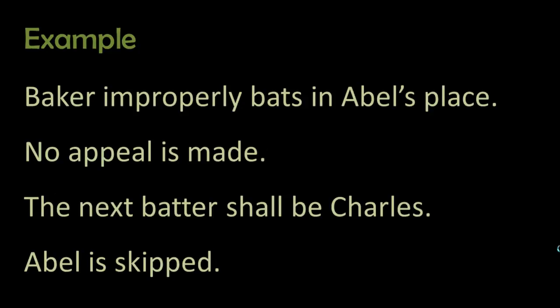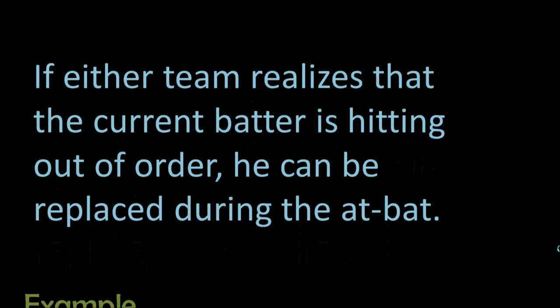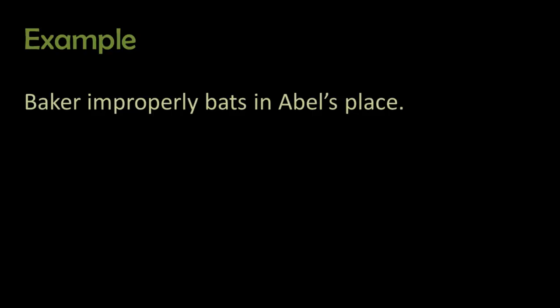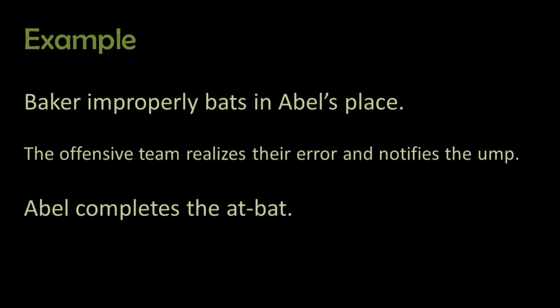If either team realizes that the current batter is hitting out of order, he can be replaced during the at-bat. Whichever team realizes the mistake can notify the umpire, and the correct hitter will take over the at-bat. If there is a count, it will remain the same. For example, let's say Baker improperly bats in Abel's place. The pitcher throws two pitches to Baker and the count is 2-0. One of the teams realizes the error and notifies the umpire. Abel then switches with Baker and bats, but he will start with that 2-0 count. Baker would then bat in his proper order after Abel.